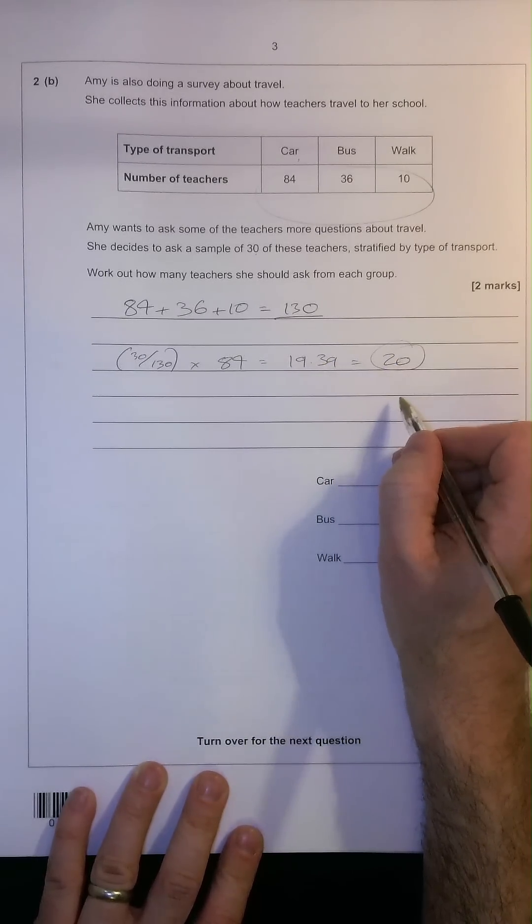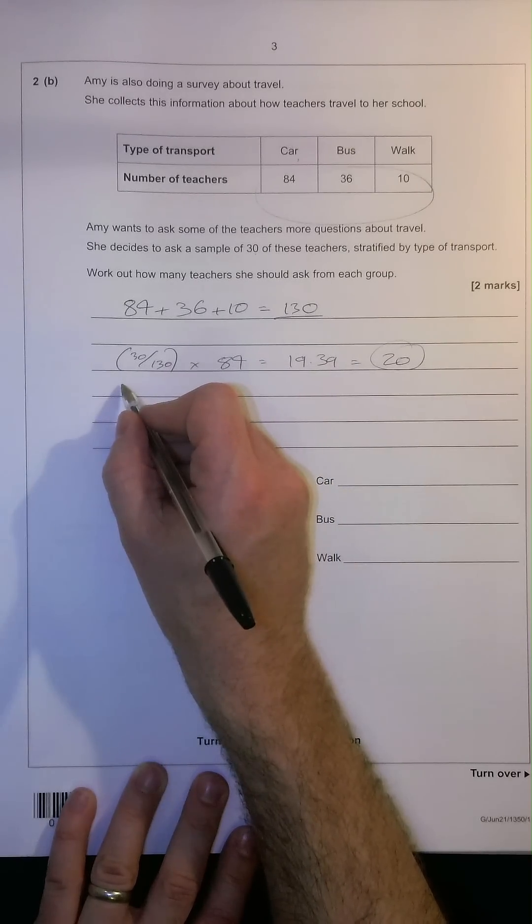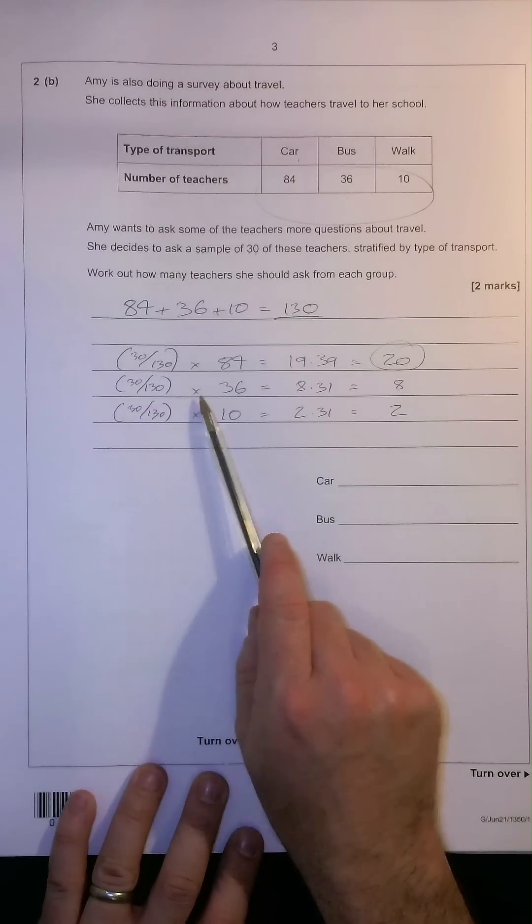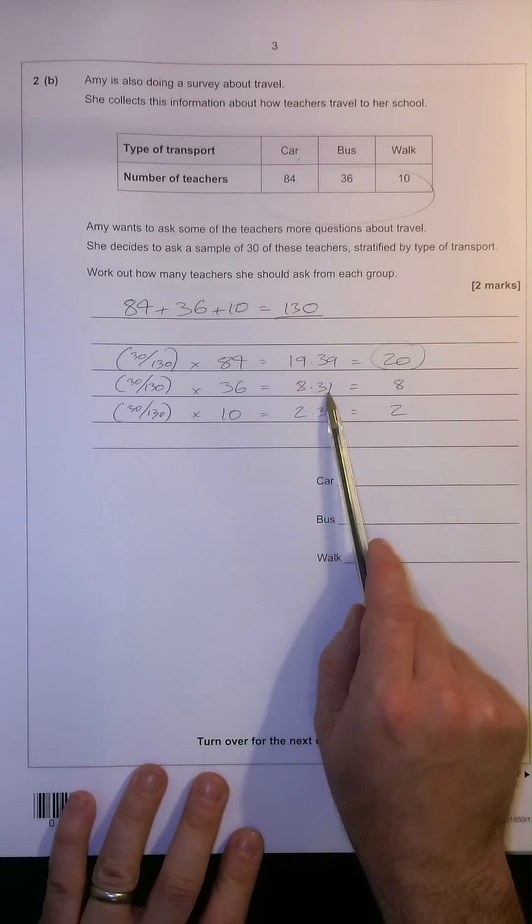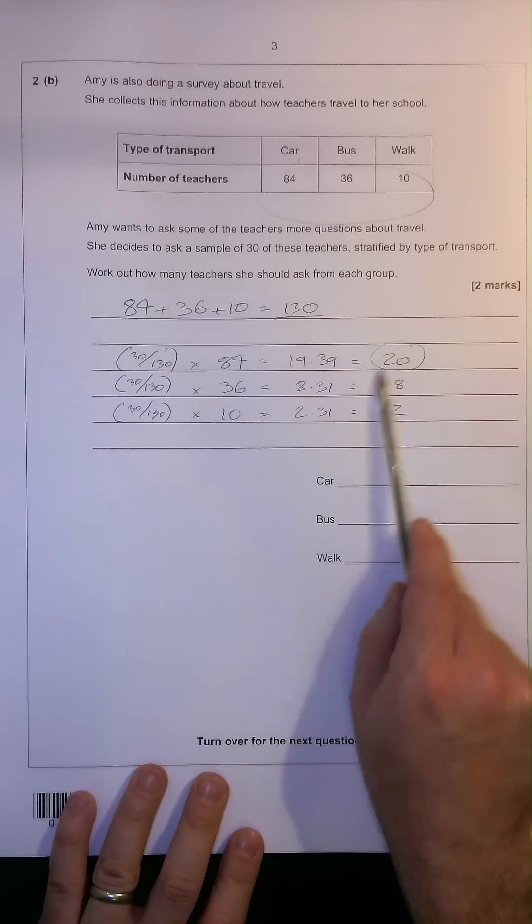And we do exactly the same for the second and the third one. 30 over 130, times by 36, the number of people who catch the bus, that will equal 8.31. Rounded to the nearest, we'll go for 8.